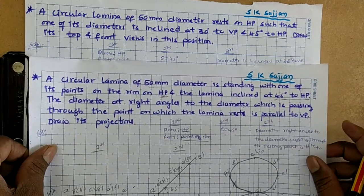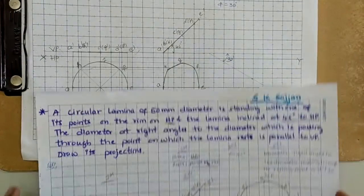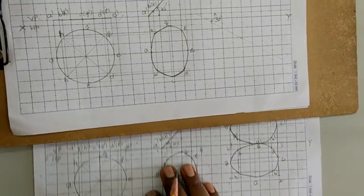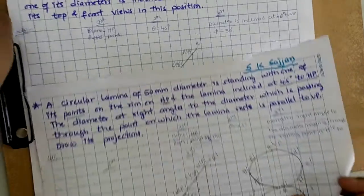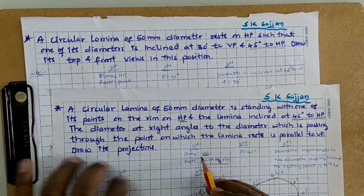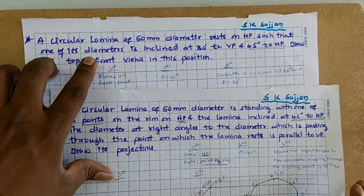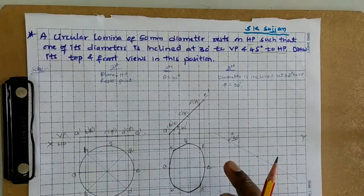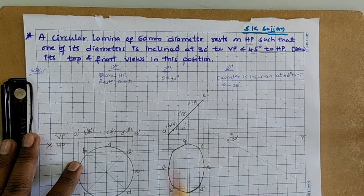In the previous problem, the plane is HP, rest on point, and 45 degrees is given for second position — same here. So the first two positions are similar. I am going to discuss only the third position. For details on how to draw the first two positions, just watch the previous video.